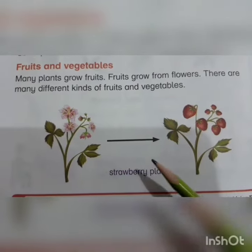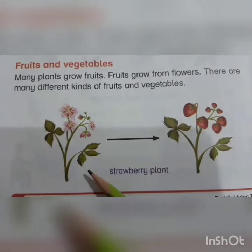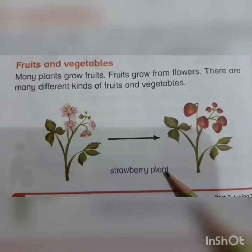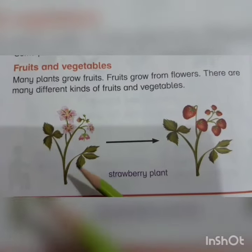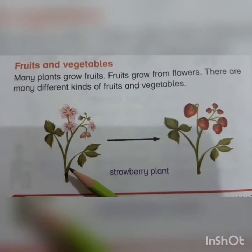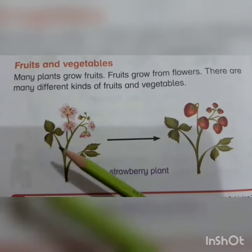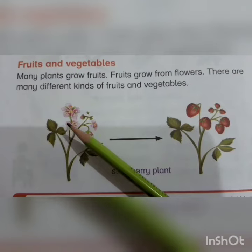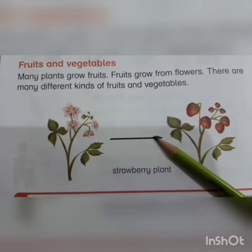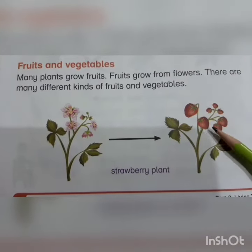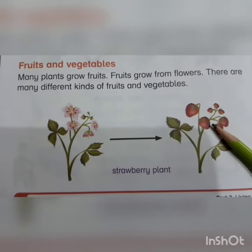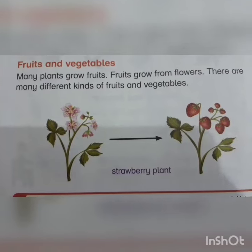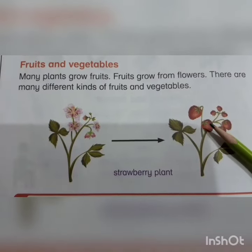For instance, look at this picture — this is a picture of a strawberry plant. Here the strawberry plant was first in the form of flowers, and it is then converted into the fruit, strawberry, from flowers.